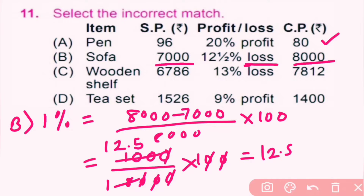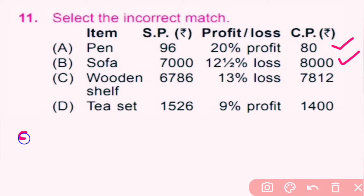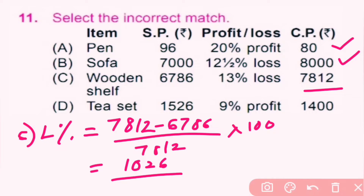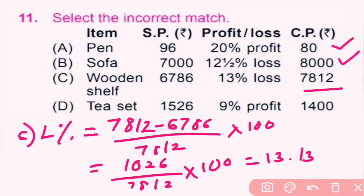For option C, sale price is 6,786 and cost price is 7,812. Cost price is more, so there is a loss. Loss percent equals cost price minus sale price divided by cost price into 100, which is 1,026 divided by 7,812 into 100, giving 13.13%. So it is an incorrect match.